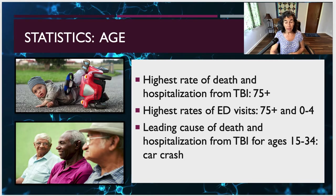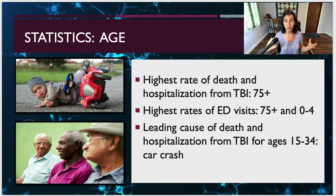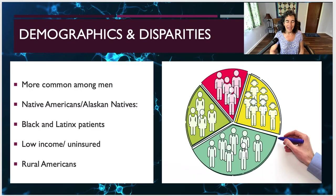Car crash is the leading cause of death and hospitalization from TBI for ages 15 to 34. When you think about the ages and stages of development, our teens and young adults have more of a sense of immortality and are in their prime physically, and are used to engaging in driving fast and potentially not being quite as cautious — that statistic makes some sense. TBIs are more common among men, more common among Native Americans and Alaskan Natives. Black and Latino patients are also higher risk, as are low-income and uninsured patients, and rural as opposed to urban individuals.